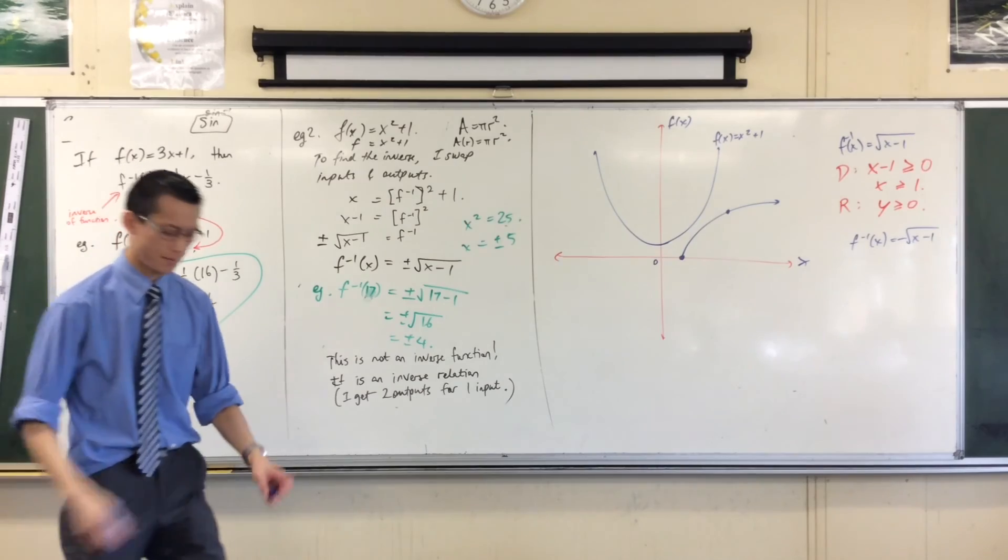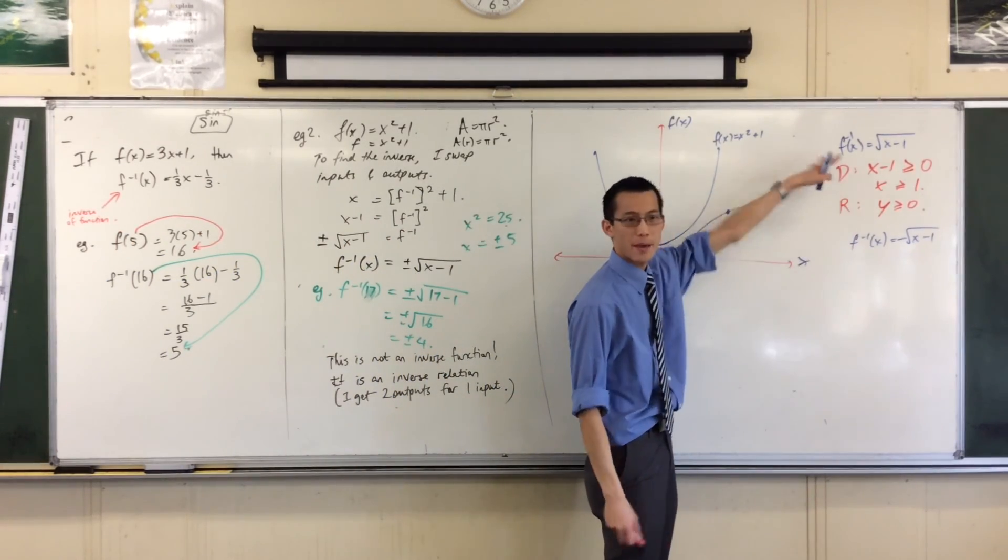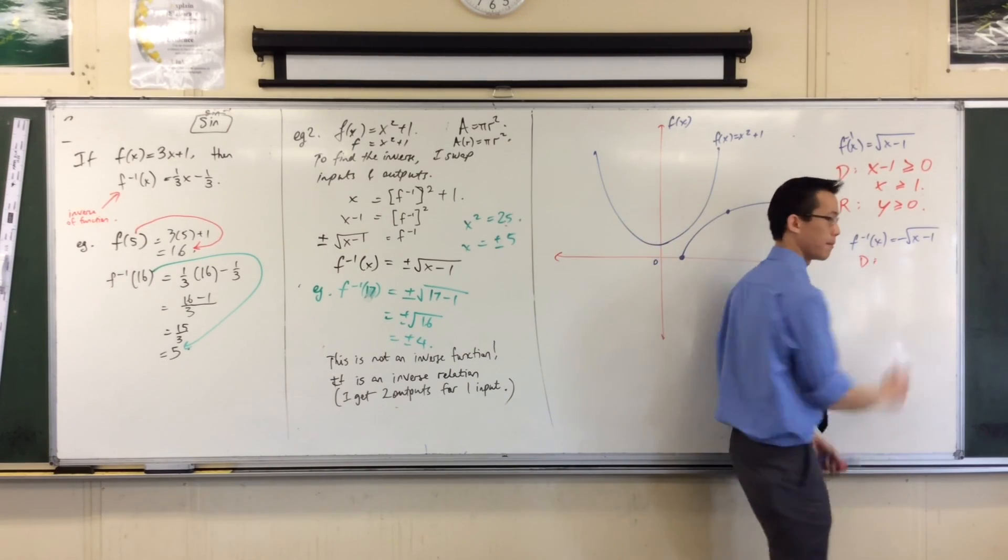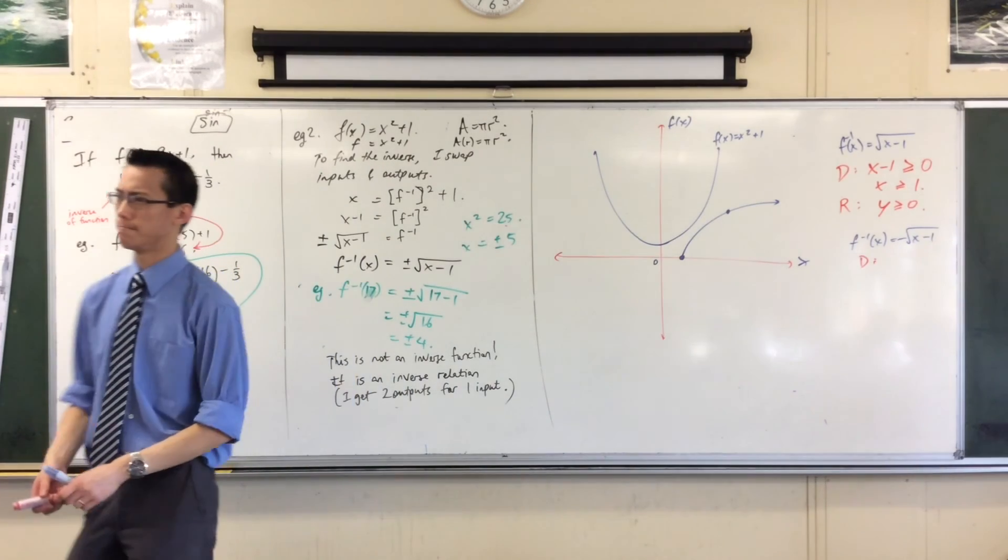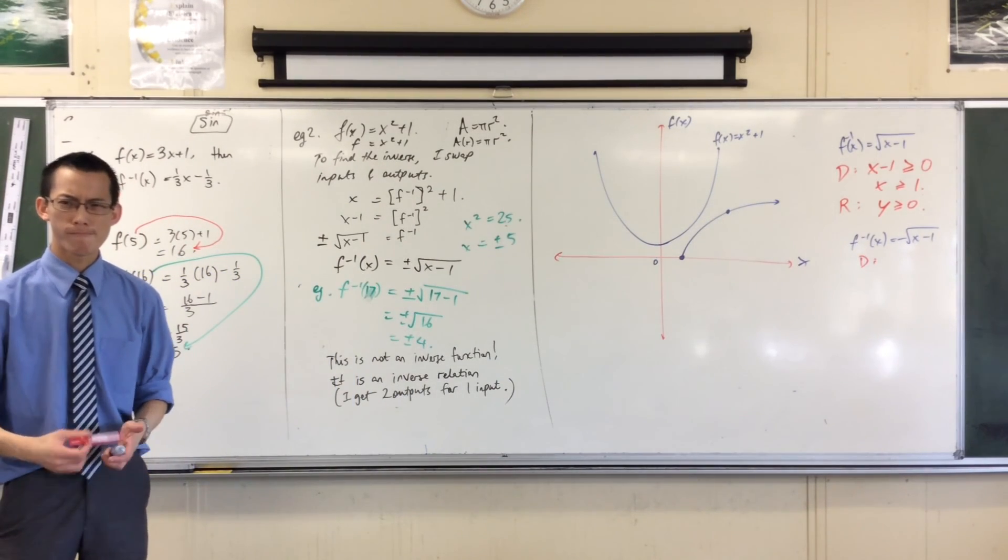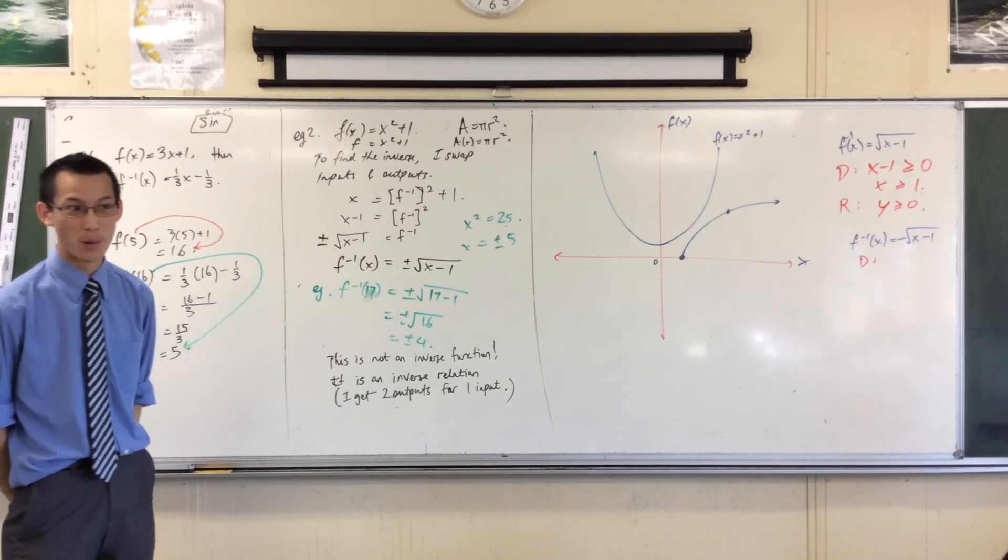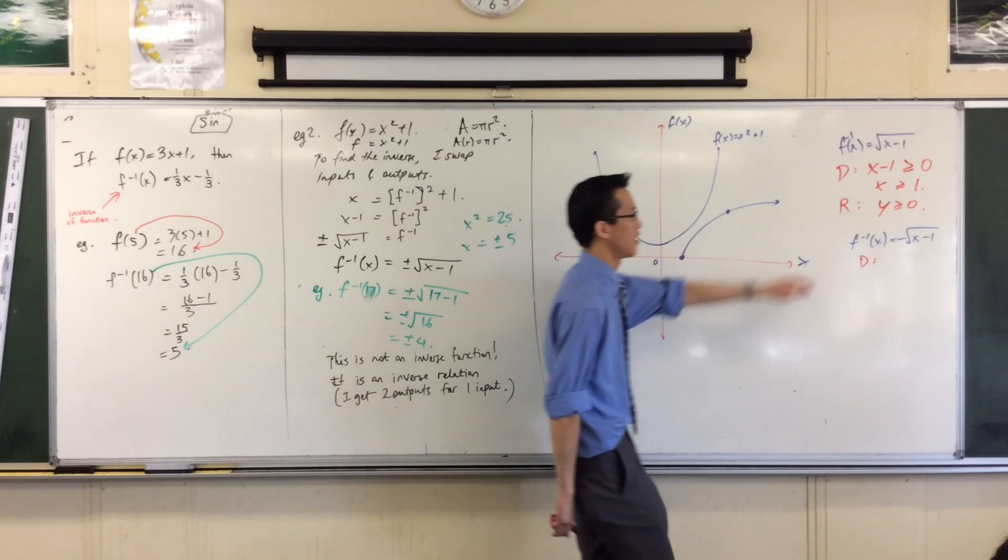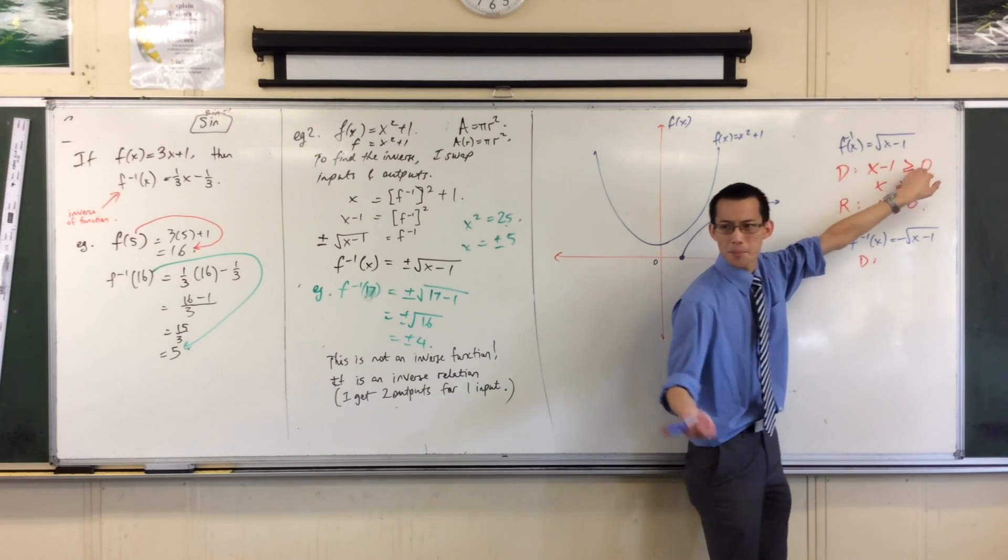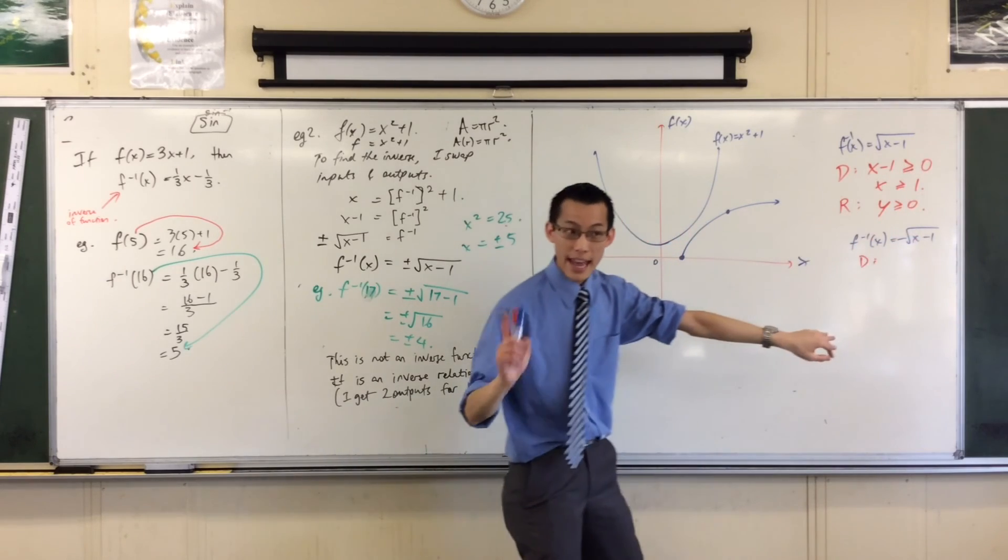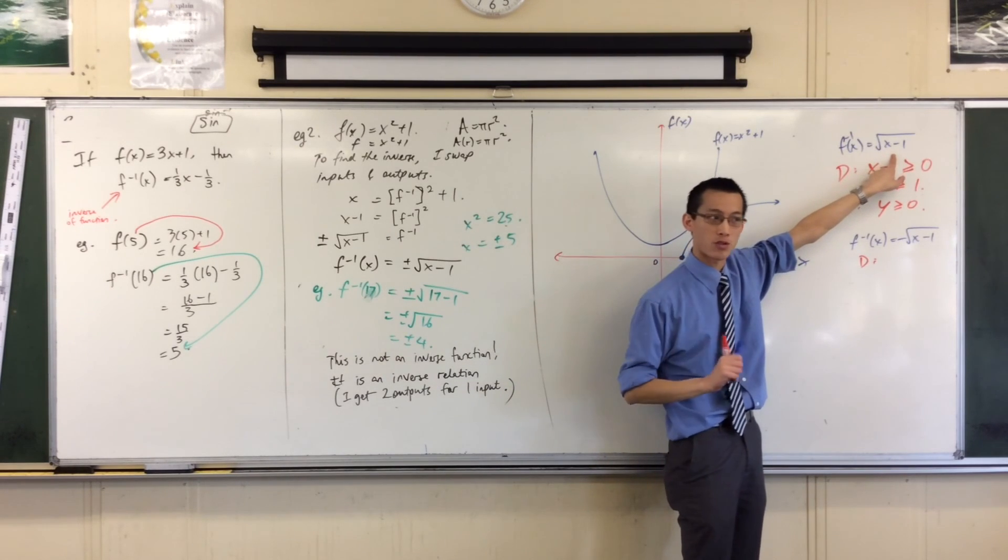Let's think in terms of domain and range again. What's the difference between the domain of this guy and the domain of this guy? Domain. It's a bit sneaky, this one. It's a deliberate curveball. Why did I work out up here that x minus 1 has to be greater than or equal 0? Why did you tell me that?